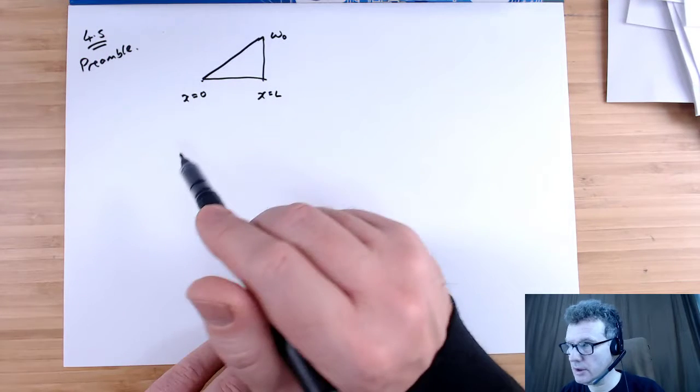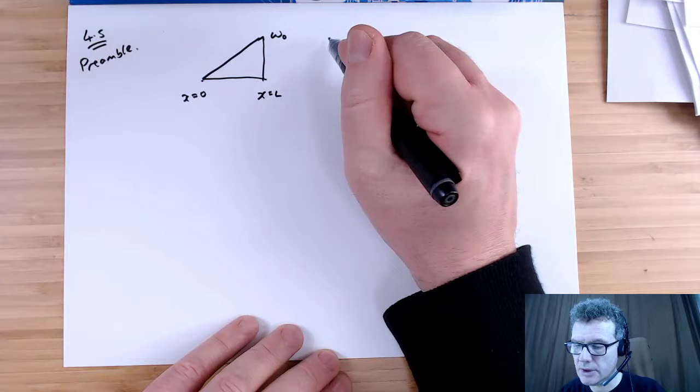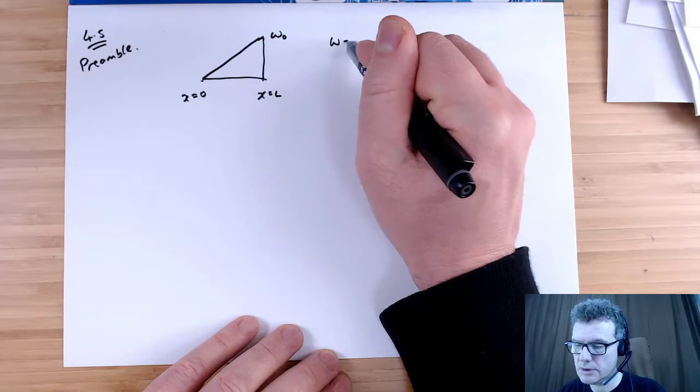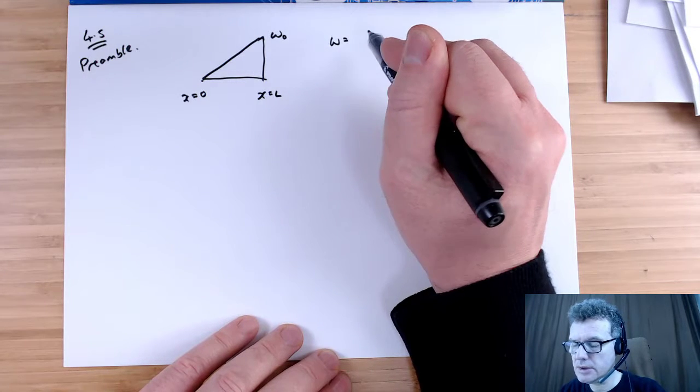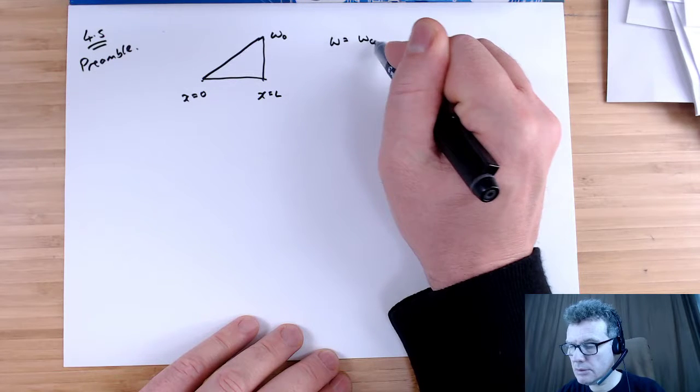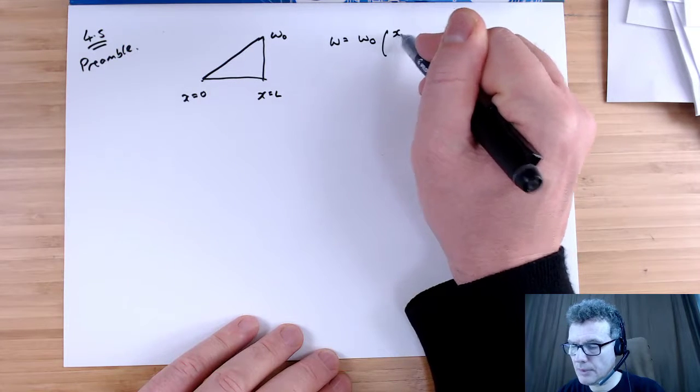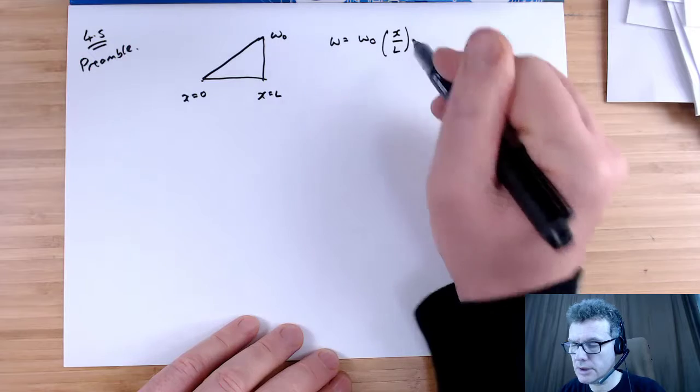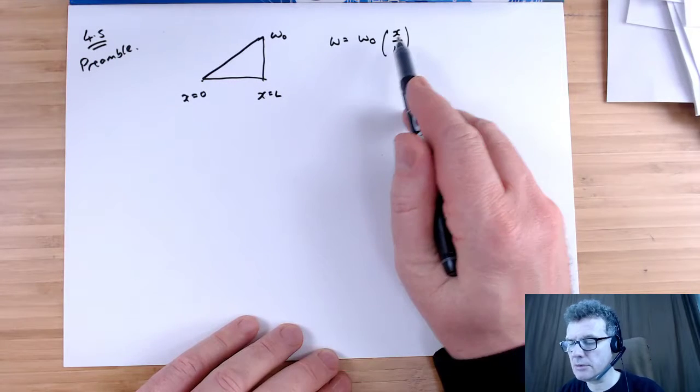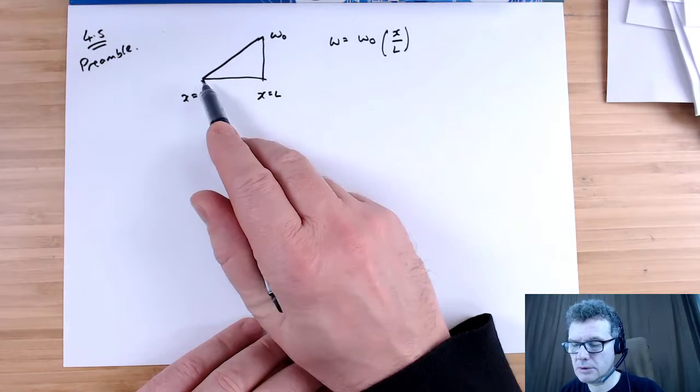Let's write a function for that. That's straightforward, just increases by x, so little w equals w0 times x divided by L. You can see when x equals 0 we're going to get little w equals 0. When x equals L we get w equals w0.